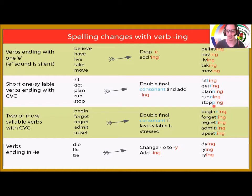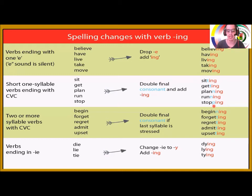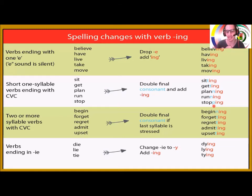Also two-syllable words with stress on the last syllable — like begin, forget, regret, admit. Igualmente, duplicamos el último consonante antes de agregar -ing, for example: begin → beginning. And verbs ending in 'y' — like tie — change the 'y' to 'i' and add -ing: tie → tying. La 'y' se reemplaza con 'i griega' + -ing por pronunciación y gramática.